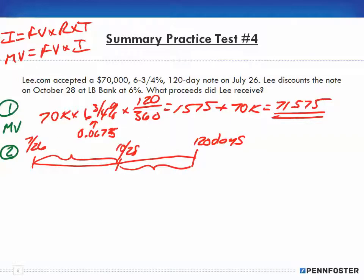So 94 days have elapsed. We take the 120 less 94, and that gives us 26 days for the discount period. That's number two: 26 days.